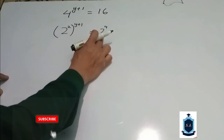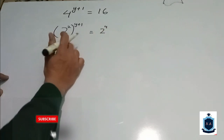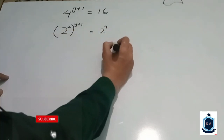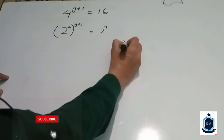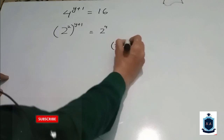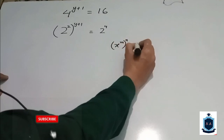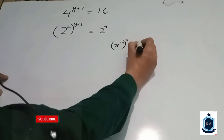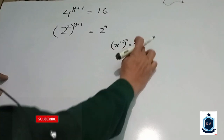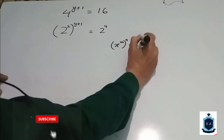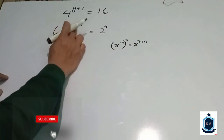Here you can see that by the power rule: whenever x power m, the power is n, which is equal to the powers multiplying together. Here you can see that m will multiply by n, then 2 will multiply by the terms inside the bracket.